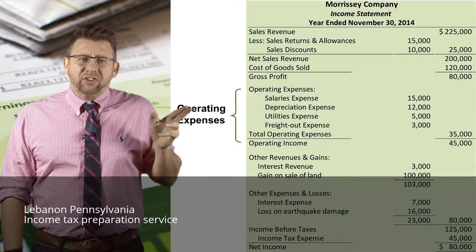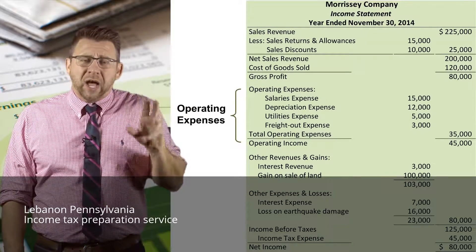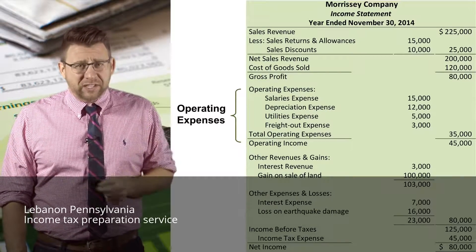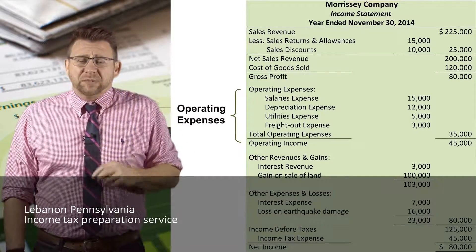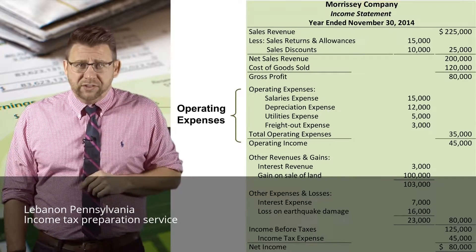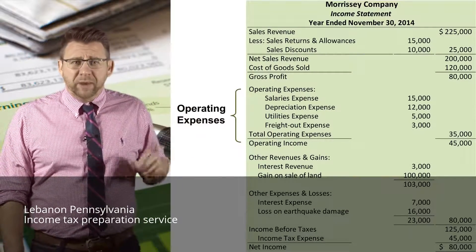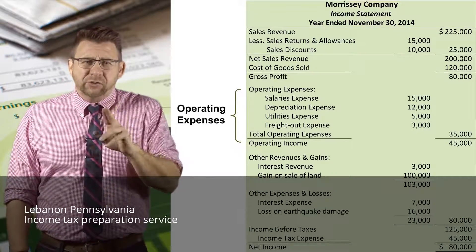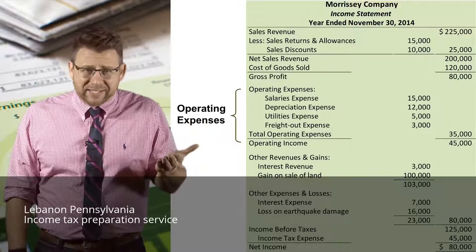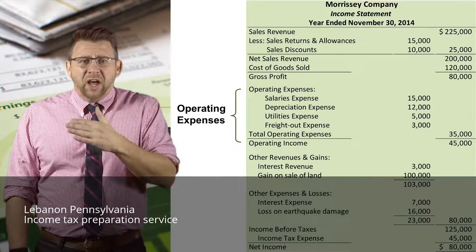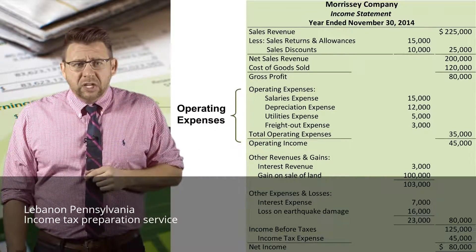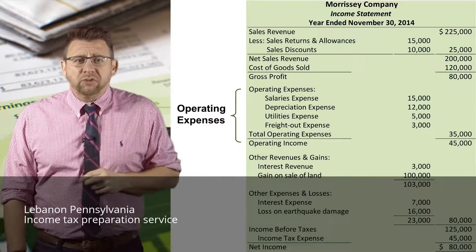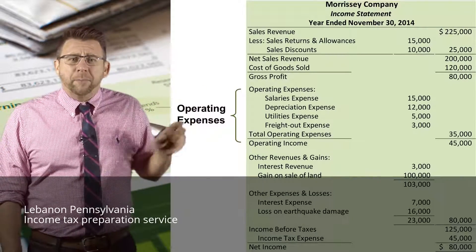The next section lists all of the operating expenses of a business. Not all expenses are listed here because not all expenses relate to operations. The most notable expense that doesn't belong in this section is interest expense, because interest expense relates to how a business finances its operations, not operates it. Operating expenses are deducted from gross profit to arrive at operating income.